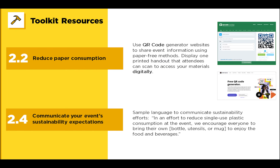If you go to the toolkit for category 2, you'll find resources including ways to reduce your paper consumption. One of these ways is to use a QR code to create materials so that you don't have to have a bunch of printed copies. There is a free QR code generator included in the resource toolkit. And for 2.4, there's sample language and tips to help you communicate your sustainability efforts to everyone involved.